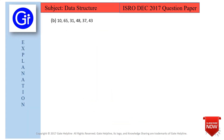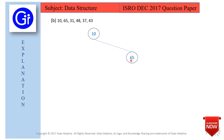Now we will see option B. Option B's inputs are 10, 65, 31, 48, 37, 43. We start with 10. Next node is 65 — since 65 is greater than 10, it will come on the right. Next we have 31. Since 31 is less than 65, it will come on the left of 65. Then we have 48 — since 48 is greater than 31, it will come on the right of 31.